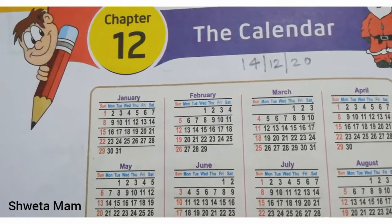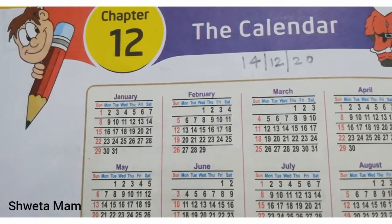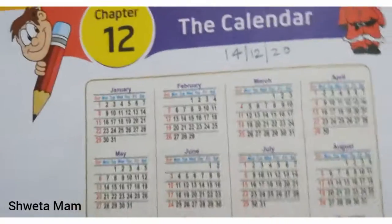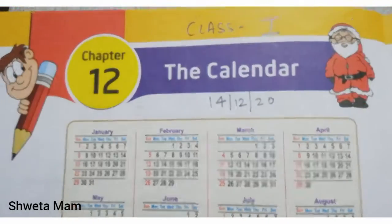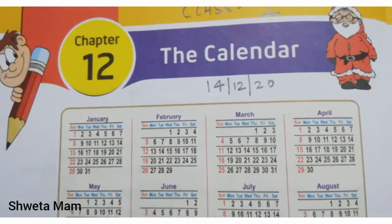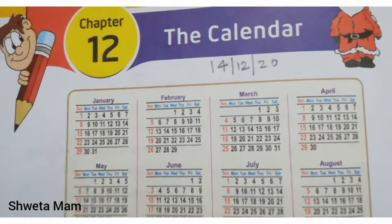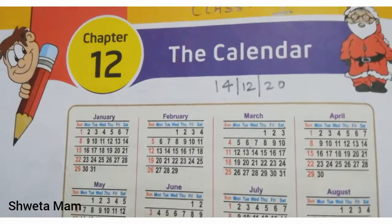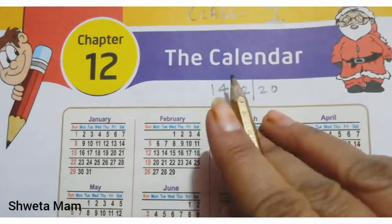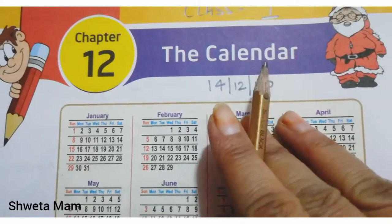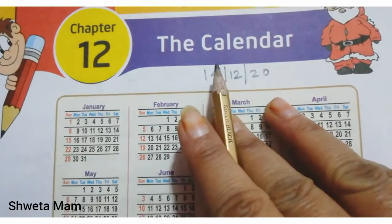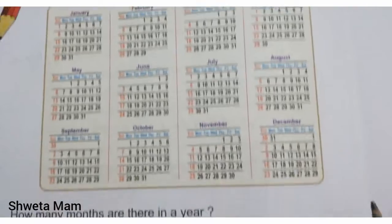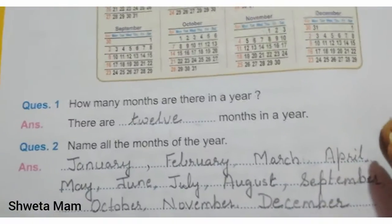Good morning class 1. Today we are going to study Let's Talk. So everybody take out your Let's Talk book. Open chapter 12, page number 26. The name of the chapter is The Calendar. Also take out your pencil and write down the answers.